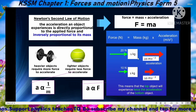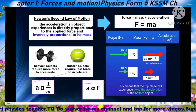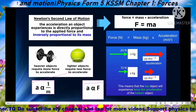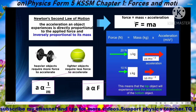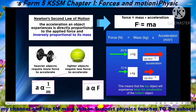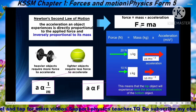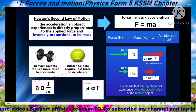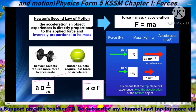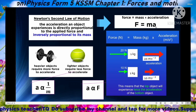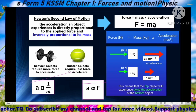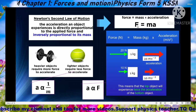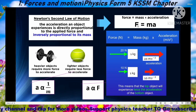The force F used in F equals MA is actually the resultant force. If there is more than one force acting on the object, you need to calculate the resultant force first, because F here is defined as the single force that produces acceleration. If more than one force acts, we call it the resultant force on the object.